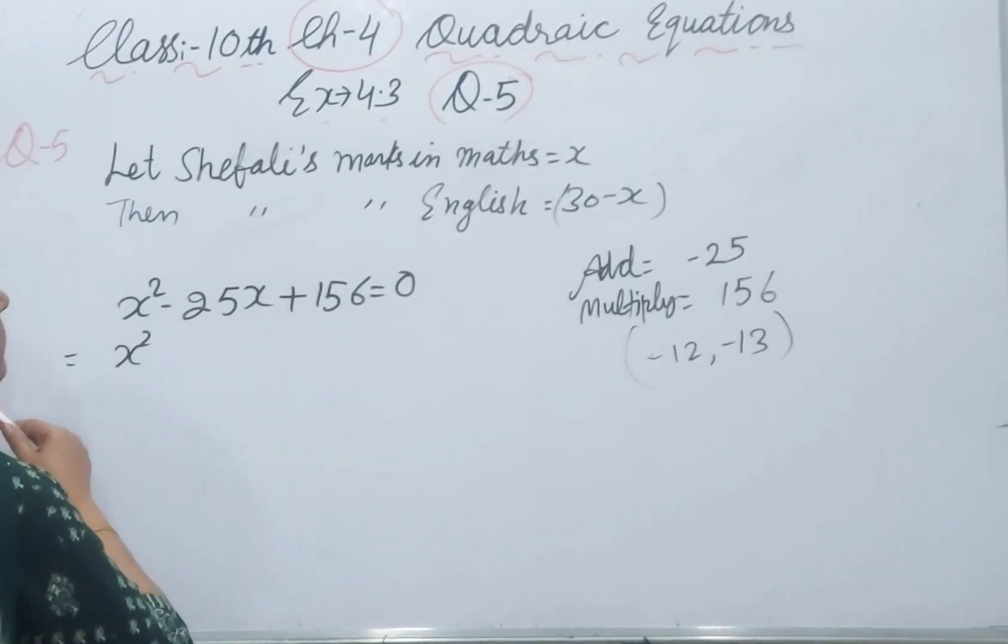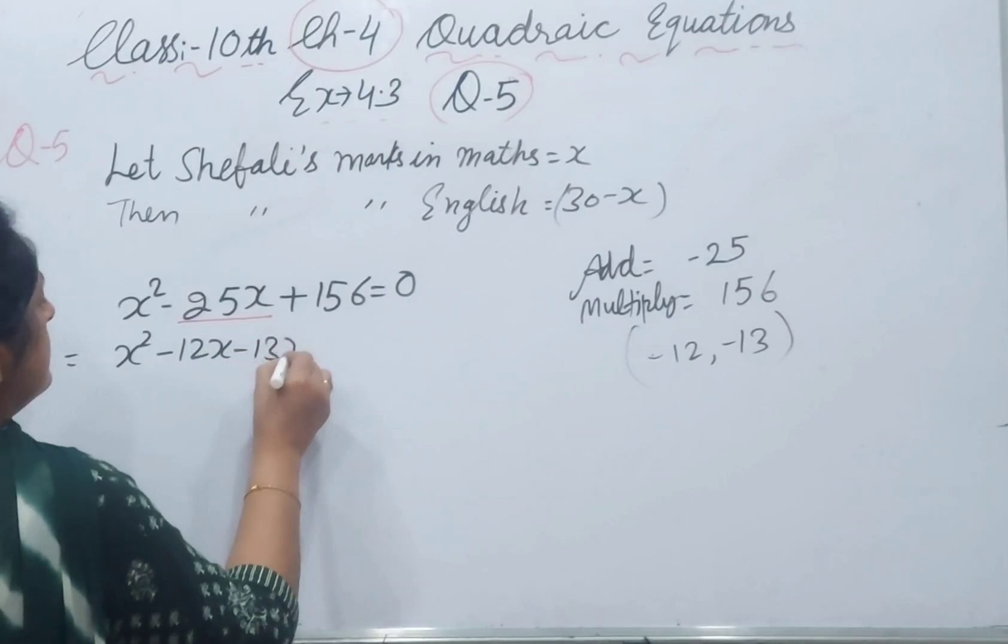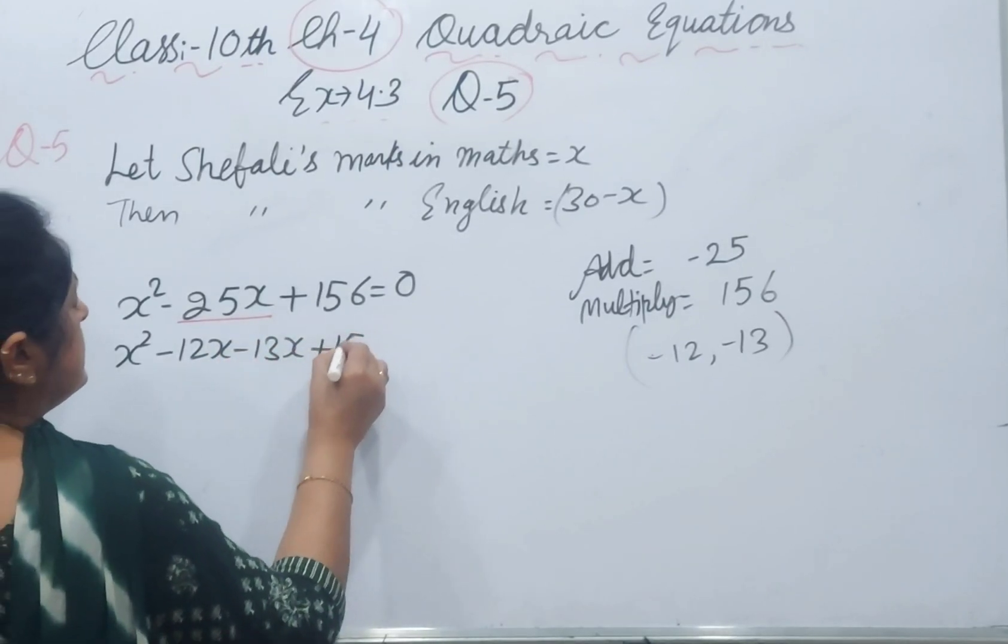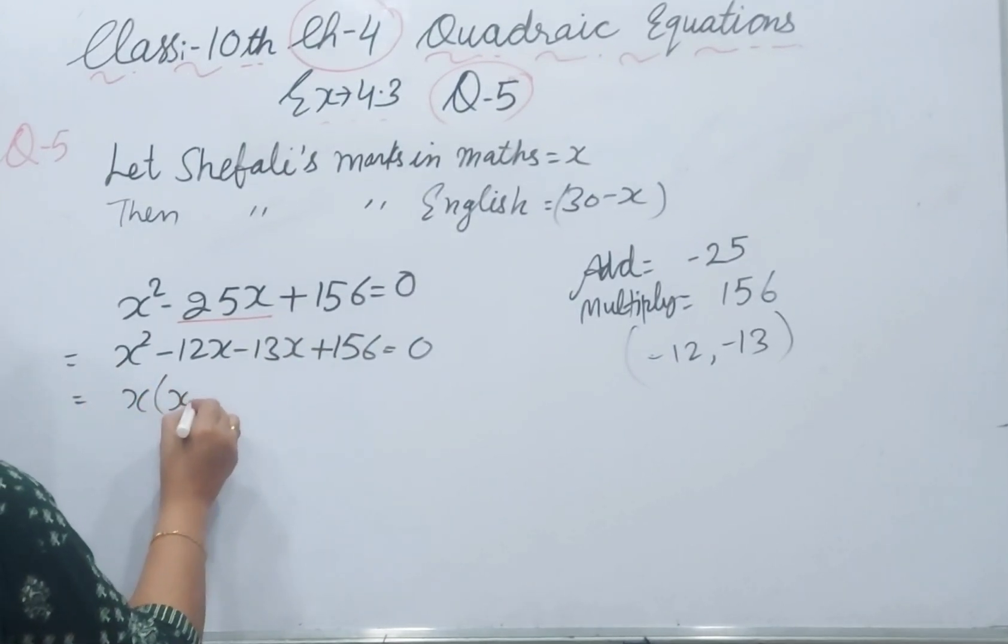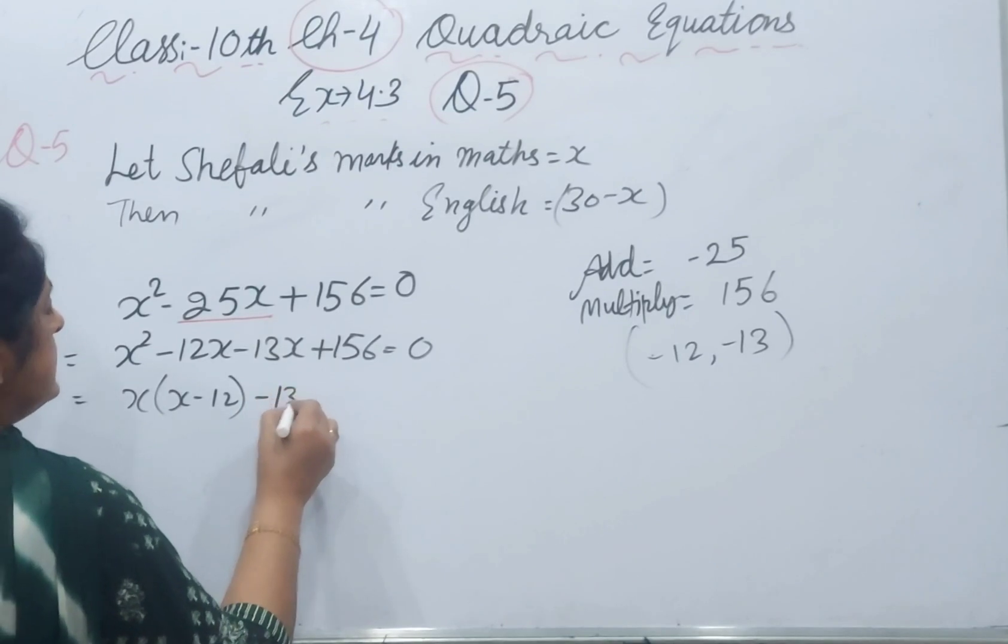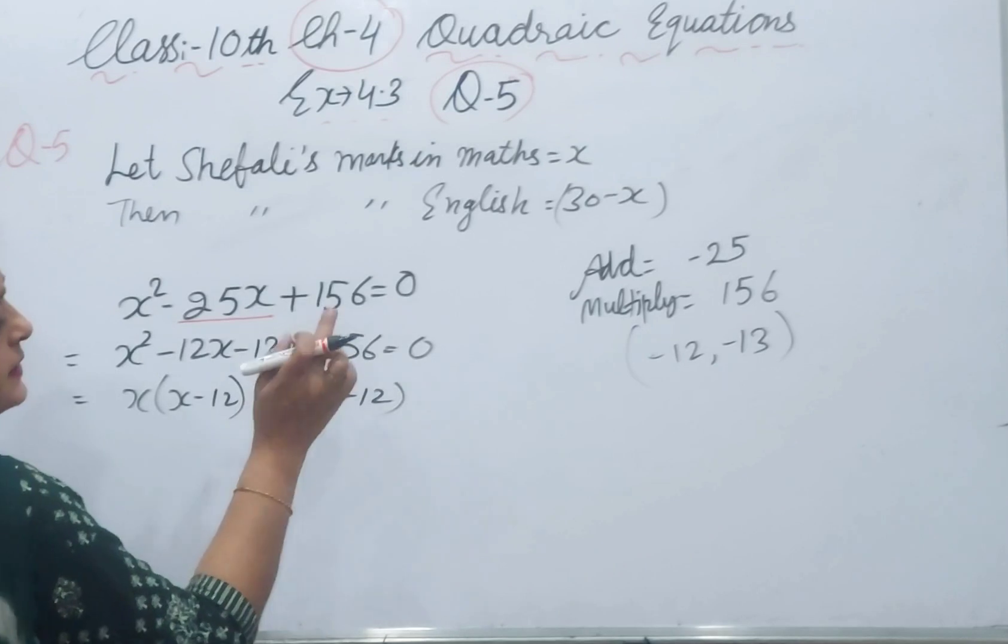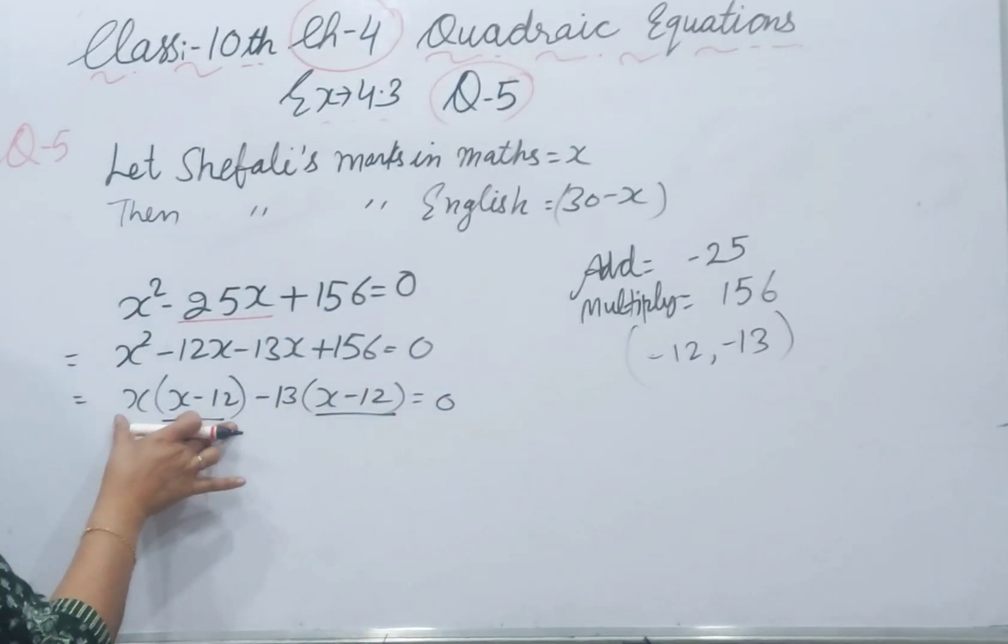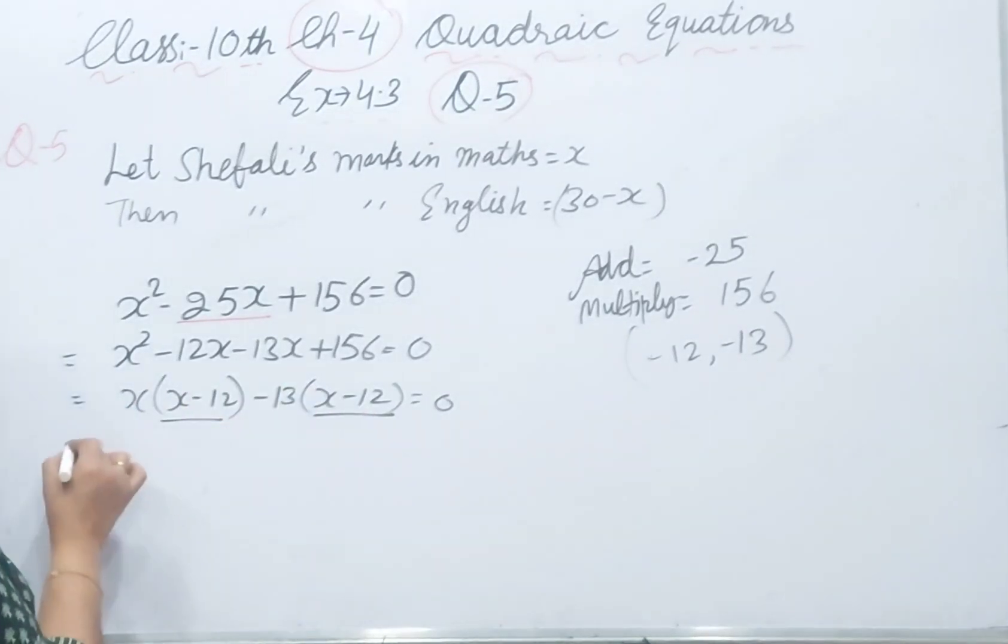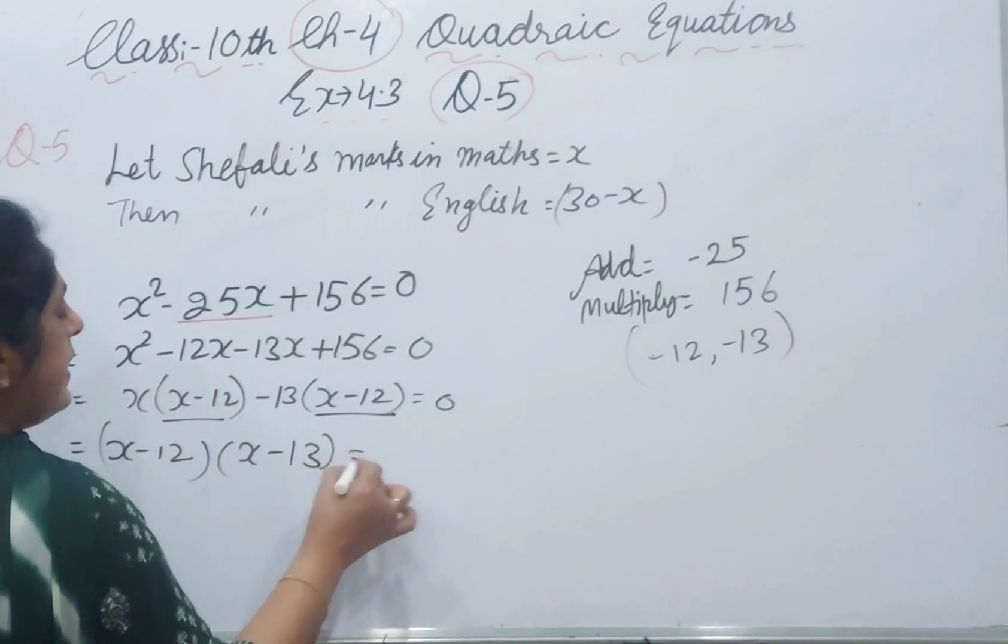Now I split the middle term: x squared minus 12x minus 13x plus 156 equals 0. Take x common: x(x - 12) minus 13(x - 12) equals 0. Taking minus outside, the internal sign changes. x minus 12 is common in these two terms. Taking x minus 12 outside, x minus 13 is left.